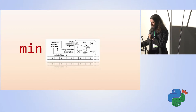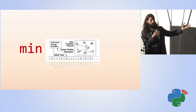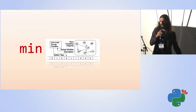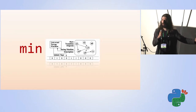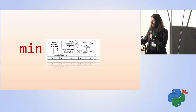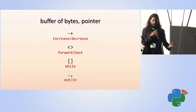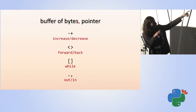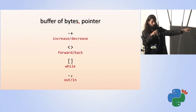Somebody asked the question: what's the minimal model of computation I can design that has the full power of Turing machines and can compute anything? One of the answers they got was something called BrainFuck. It's a programming language with eight instructions: plus, minus, less than, greater than, brackets, dot, and comma.